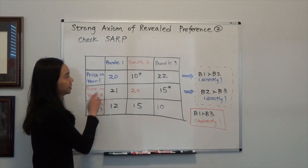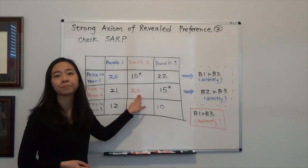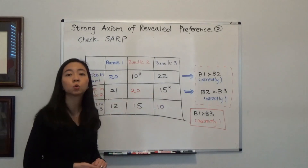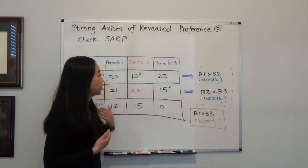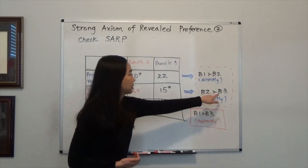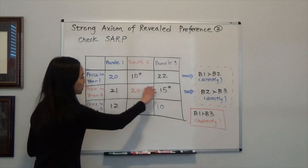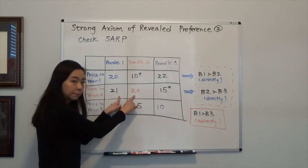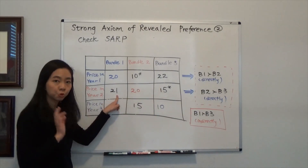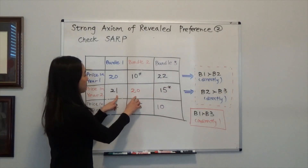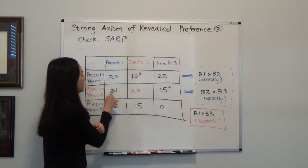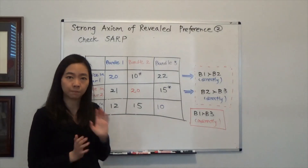Now take a look at year two. We know in year two we purchased bundle two. At the same time, we see that bundle three was affordable — it's $15, which is less than $20 — but we did not buy it. Therefore, I can conclude that bundle two is directly revealed preferred to bundle three. Can we say anything about the preference between bundle one and bundle two in year two? No, we can't, because bundle one was not affordable in year two. When something is not affordable, it doesn't tell me anything about your preference.